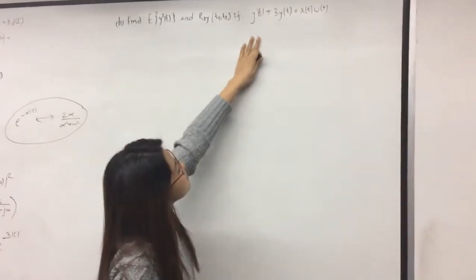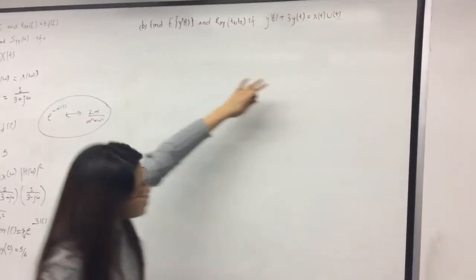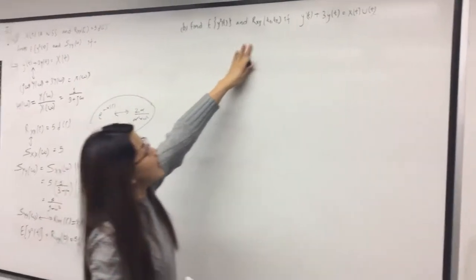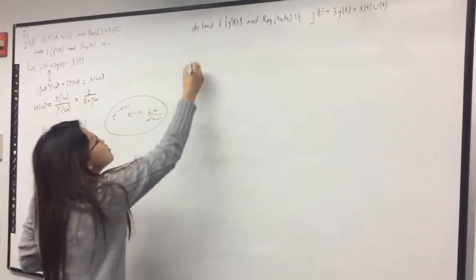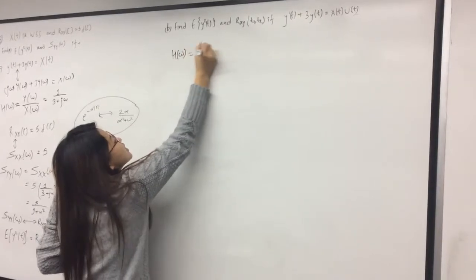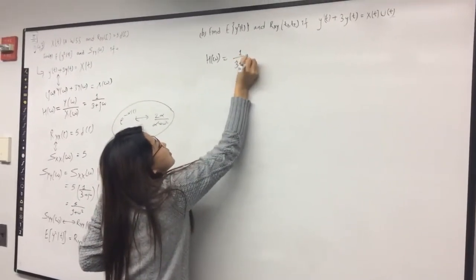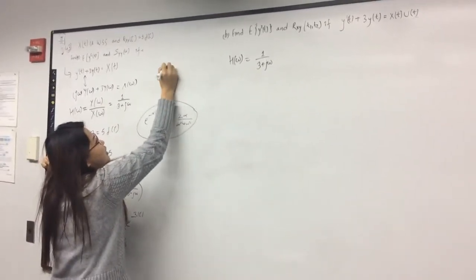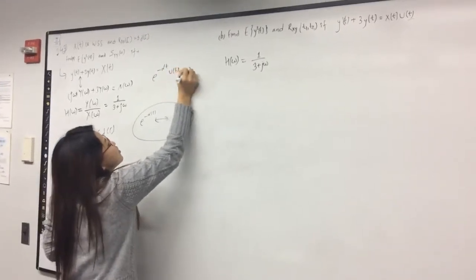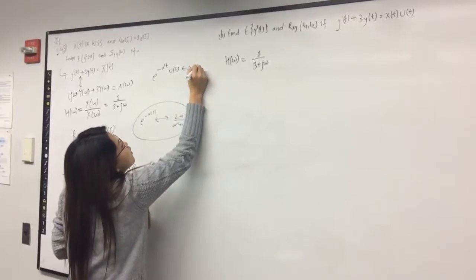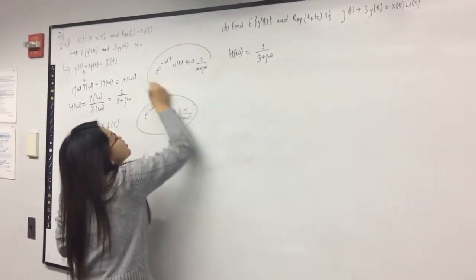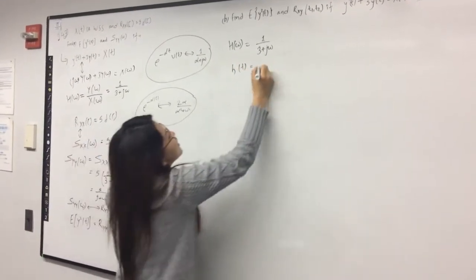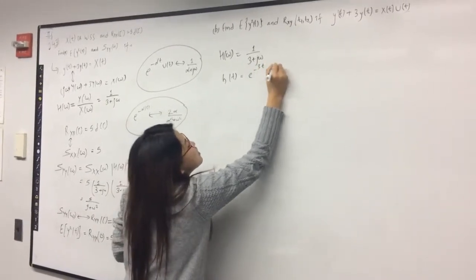For the second part, we have the same equation except there is an additional u(t) on the right side. We need to find E[y²(t)] and R_xy(t1, t2). We use the same system function H(ω) = 1/(3 + jω). The impulse response is h(t) = e^(−3t)u(t), using the transform pair e^(−αt)u(t) ↔ 1/(α + jω).